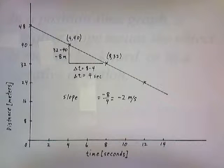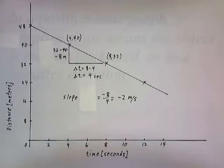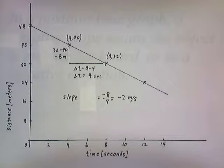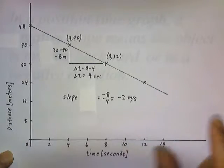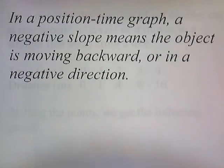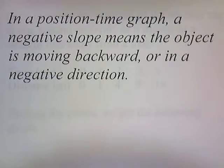Since the motion of our object is horizontal, a negative sign means the object is moving right to left, or to the west. If the object were moving vertically, a negative sign would mean the object is moving down or to the south. In a position-time graph, a negative slope means the object is moving backward or in a negative direction.